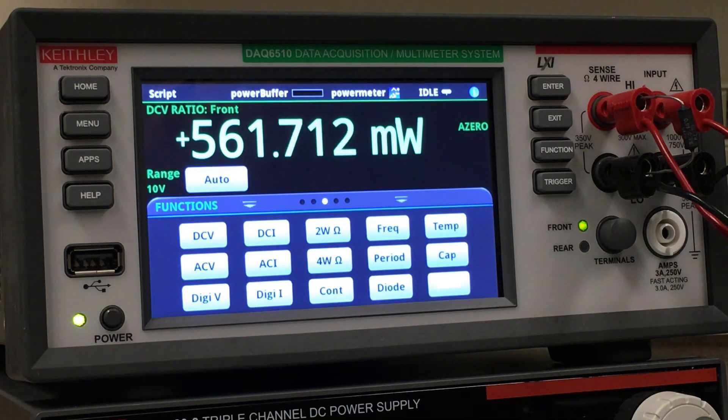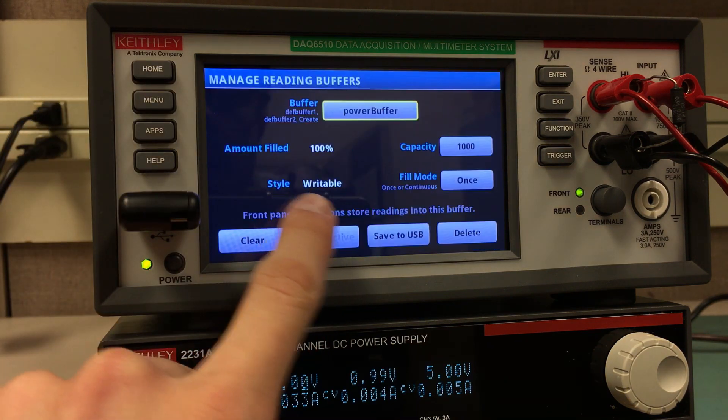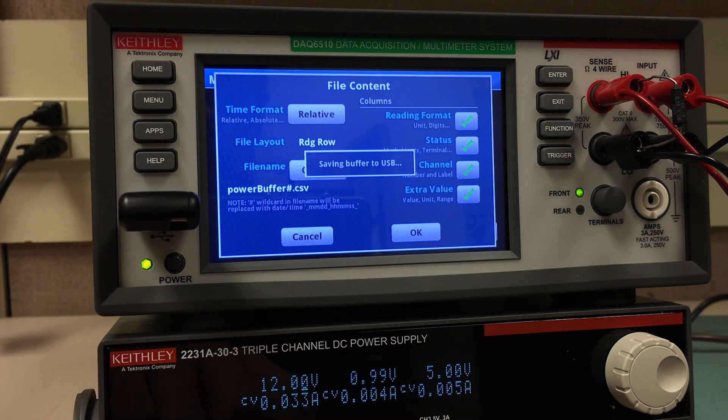This method of measuring power is useful for quickly troubleshooting and for getting a pretty good general idea of how much power a particular branch of your circuit is drawing. Both the power buffer and reading buffer can be exported and saved to a CSV file on a flash drive, like so.